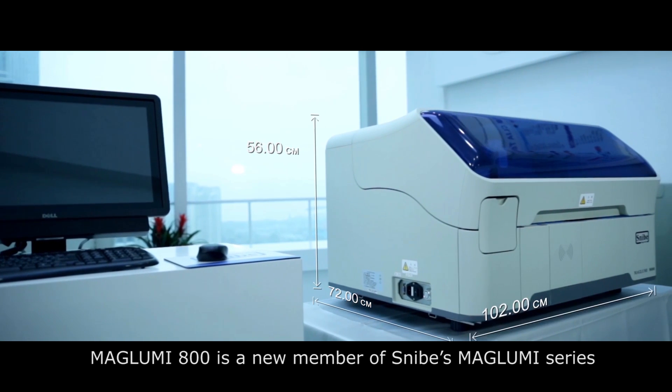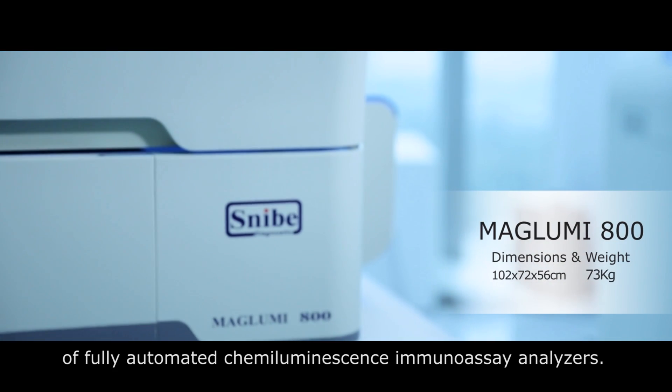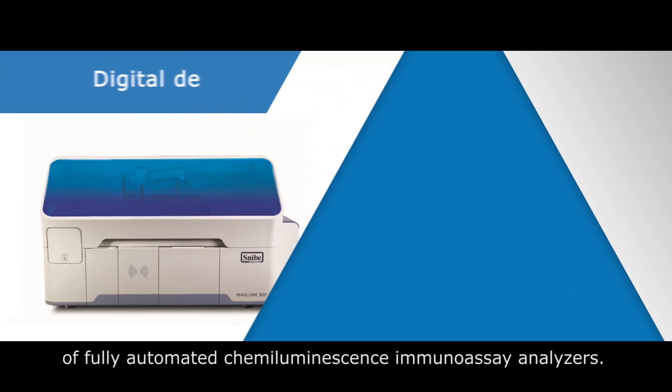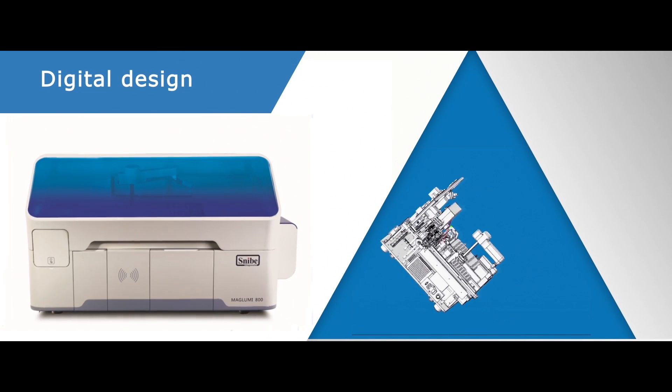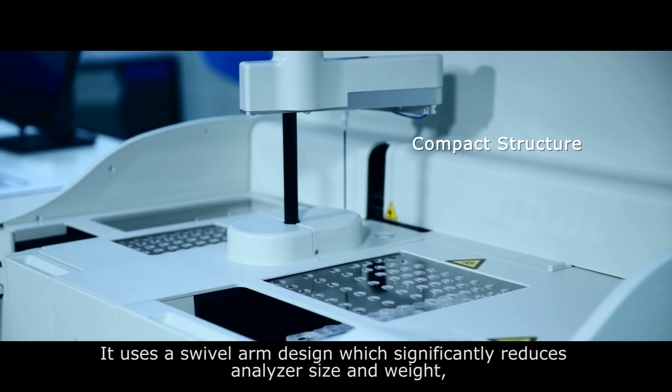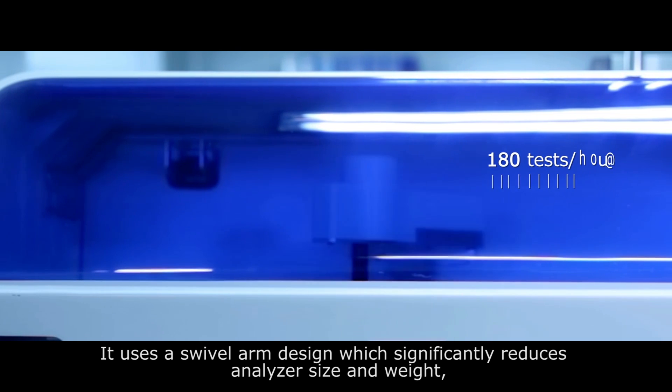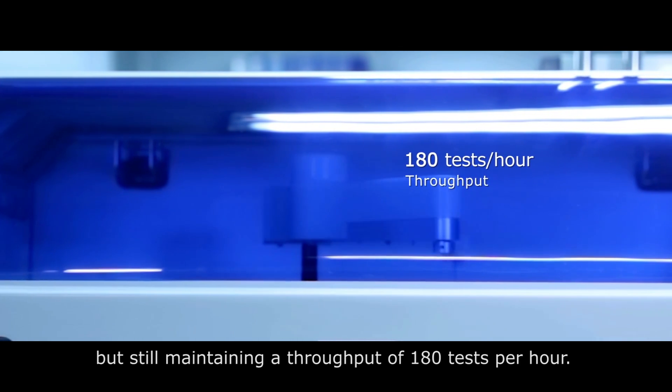Maglumi 800 is a new member of Snibe's Maglumi series of fully automated chemiluminescence immunoassay analyzers. It uses a swivel arm design which significantly reduces analyzer size and weight but still maintains a throughput of 180 tests per hour.